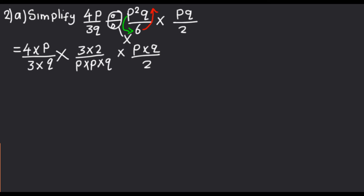Upon reaching here, we can see the numbers and letters that we can cancel. We have a 3 here, so I can cancel this 3. Then we have this 2 and these 2 can be cancelled. We can also cancel this Q and this Q. Then we can cancel this P and this P, and this P and this P.